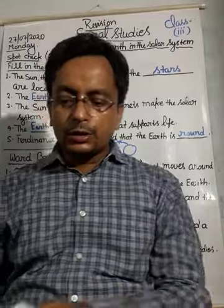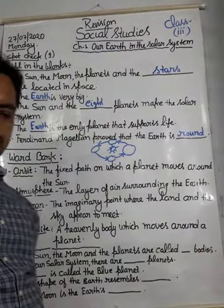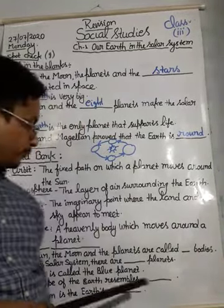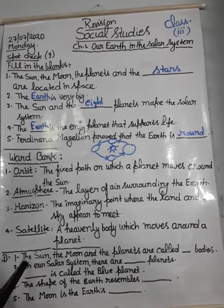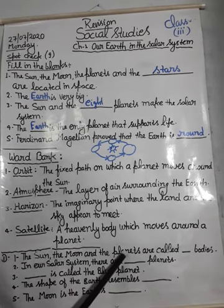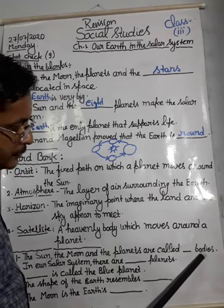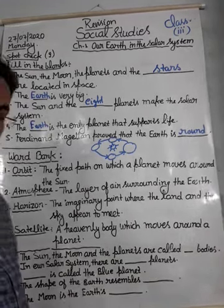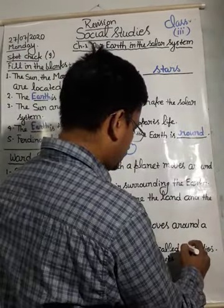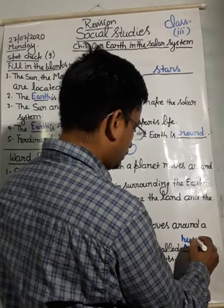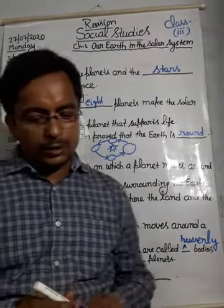Next is from your exercise — circle the correct answer. I have framed it in fill in the blanks form. The sun, the moon and the planets — the sun, the moon and the planets are called dash bodies. What will be the answer? The answer will be heavenly bodies.